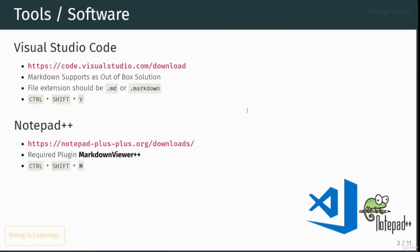Please download the Notepad++ software from the internet — the link has been provided on the slide. I've been using Notepad++ for a very long time and I like the tool a lot. For Visual Studio Code, after saving the file as either .md or .markdown, please use Ctrl+Shift+V as a shortcut to preview the Markdown. In the case of Notepad++, please use Ctrl+Shift+M — this is the shortcut for the Markdown Viewer preview.